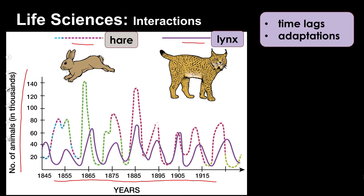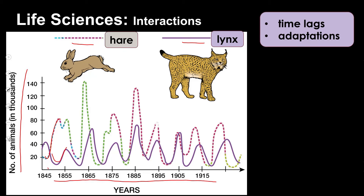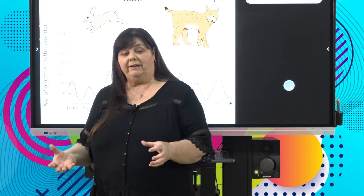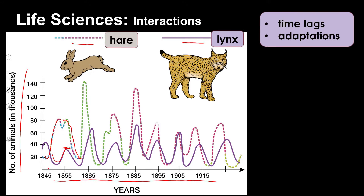Let's follow the hare. The hare population increased, and just behind it, the lynx population was increasing too — more hares means more food for the lynx, so the lynx population grows. Then we see something interesting: the hare population drops, because the lynx population is becoming too large — too many predators and not enough prey. After a while, the predator population drops and the prey population skyrockets, because with no predators it's a free-for-all.